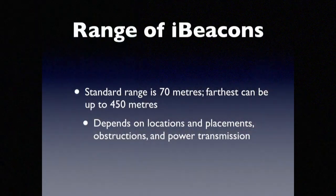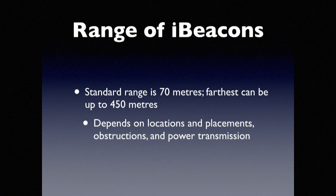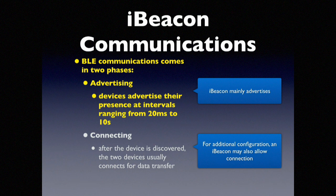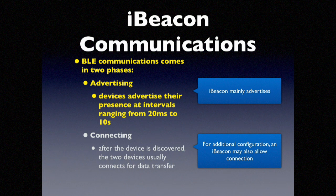What's the range of iBeacons? Standard range is 70 meters, and the farthest is 450 meters, depending on location, placement, obstructions, and the power transmission of the beacon. Bluetooth Low Energy devices have two phases: advertising, to let people know you are around, and connecting to configure the device. For iBeacons, the main task is to advertise — it just keeps advertising itself.